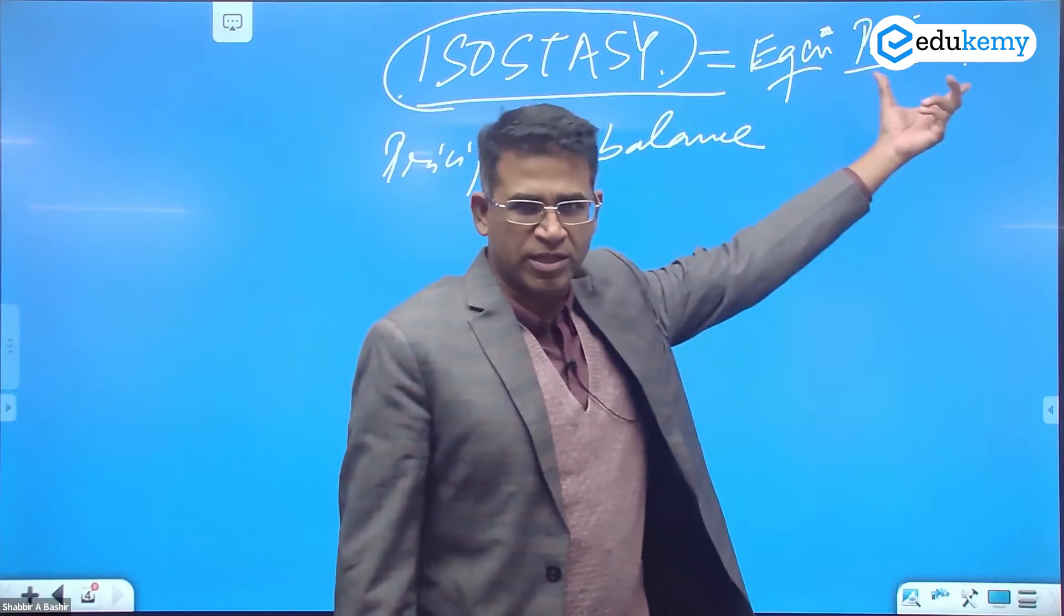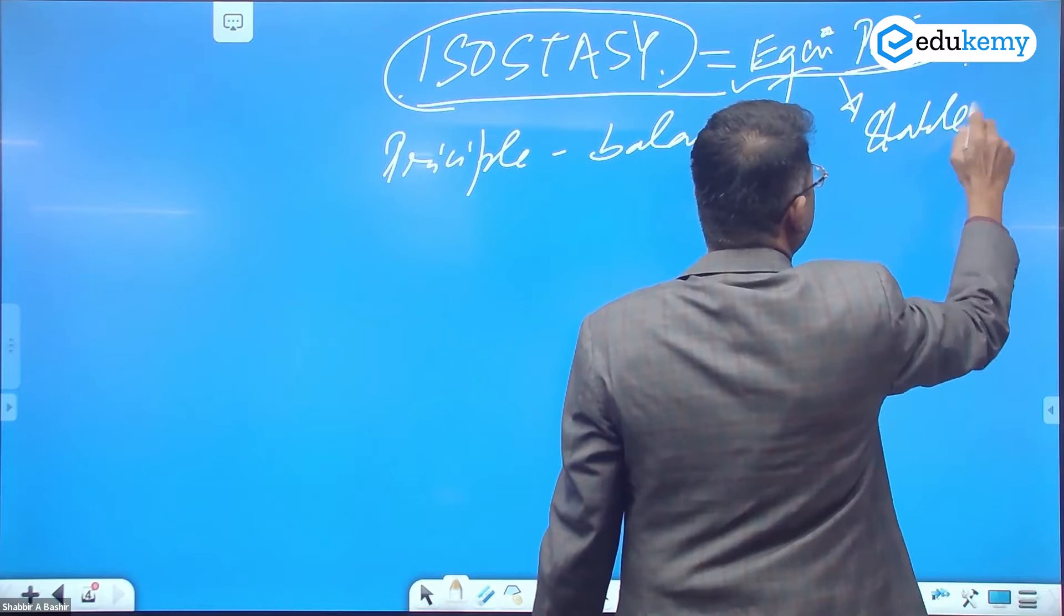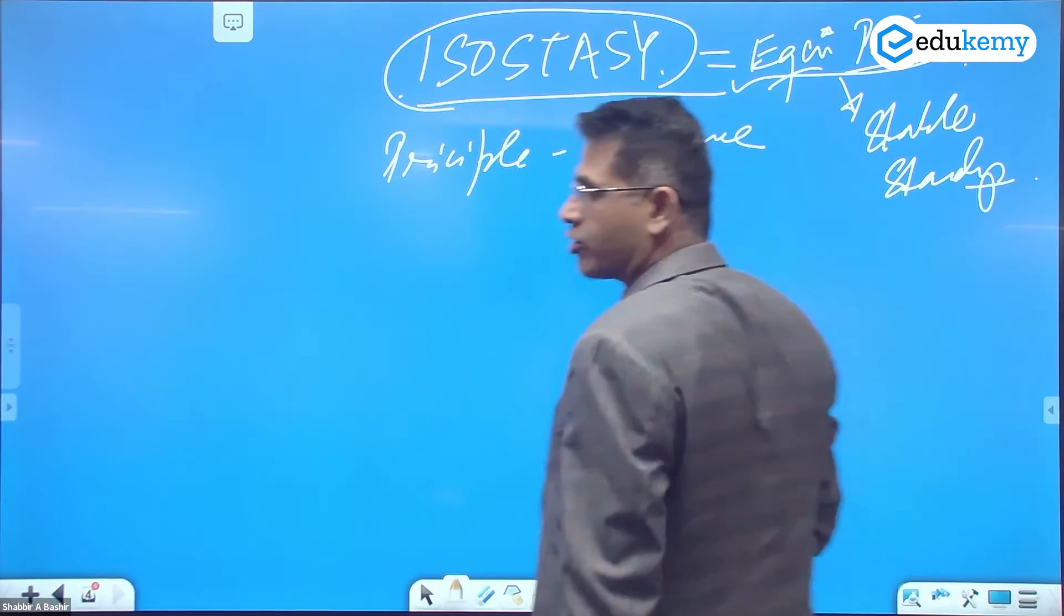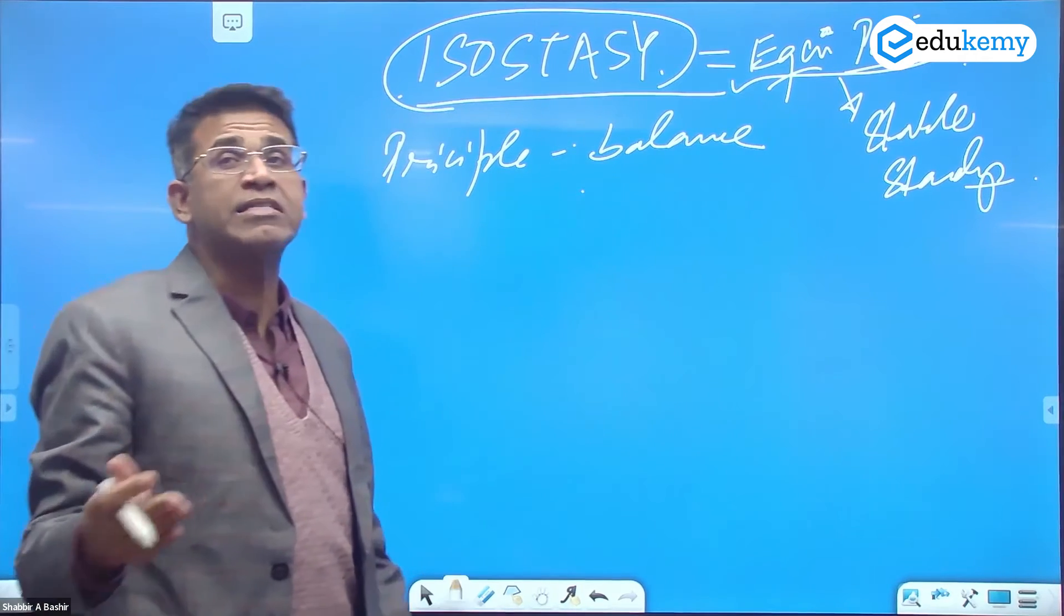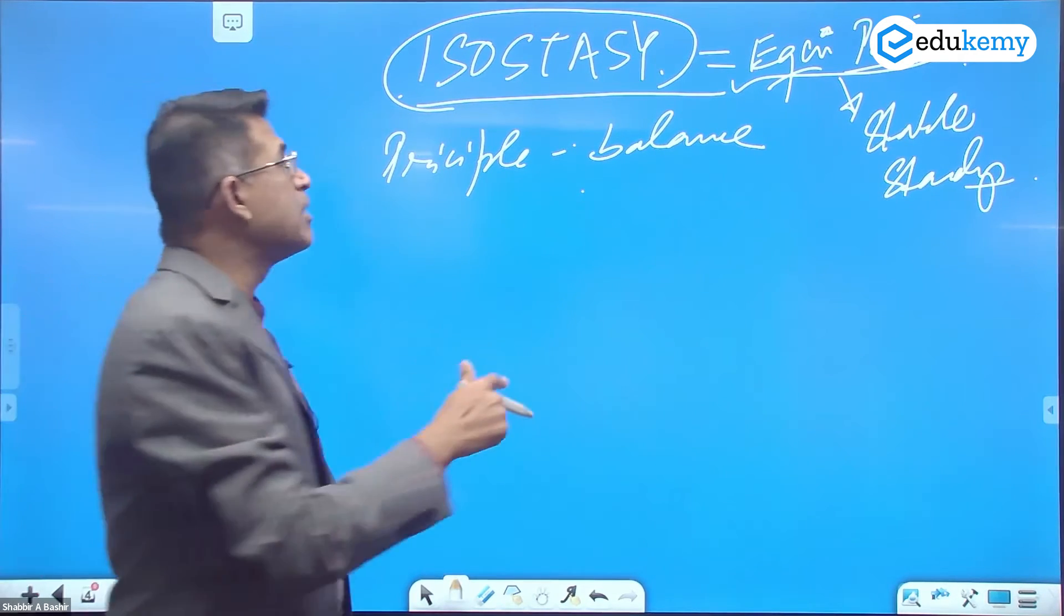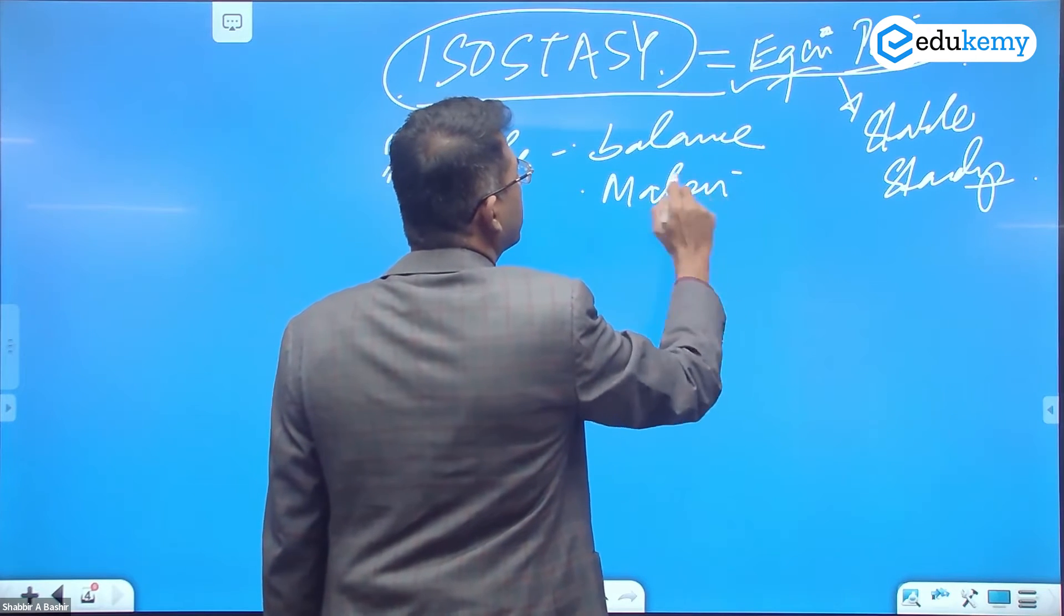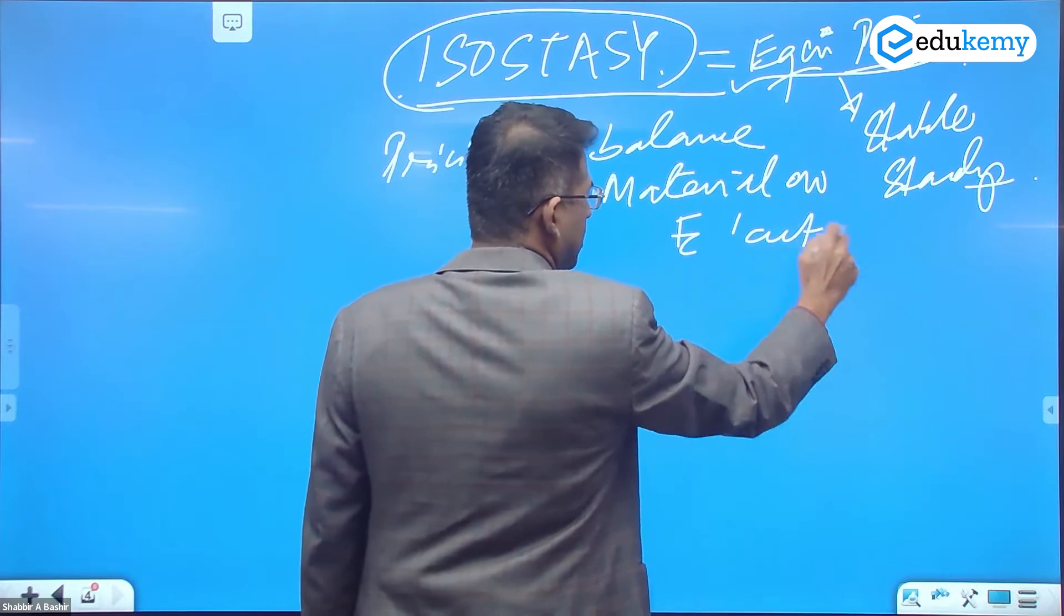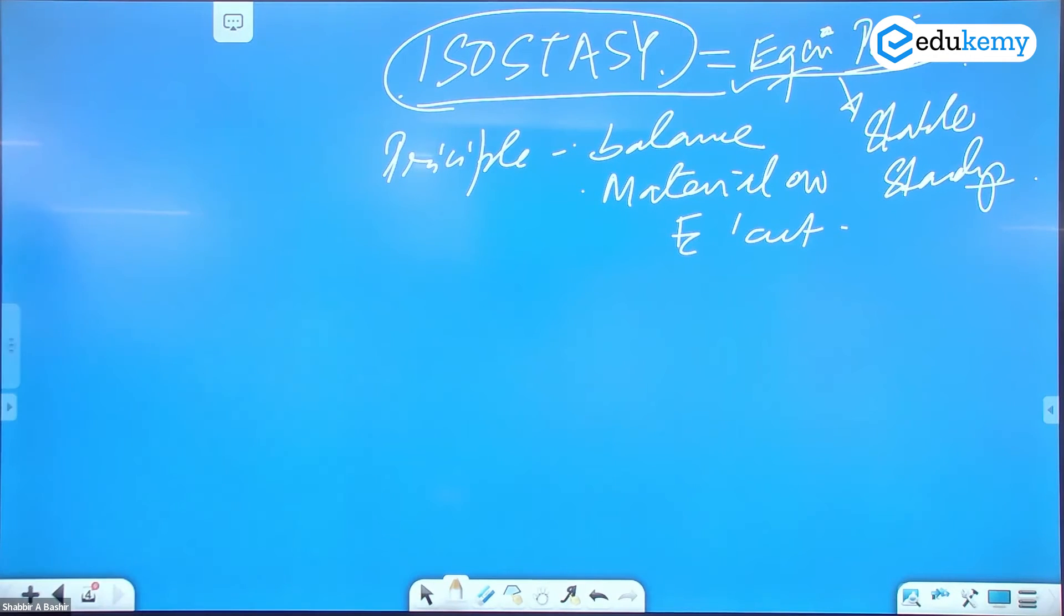This word equipoise means stable standing. It's a principle that tells us how the landforms balance themselves, a principle that tells us how the material of the earth's crust—felsic rocks, mafic rocks, olivine, quartz and amphibole—how is the material of the earth's crust distributed?